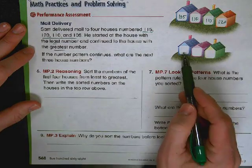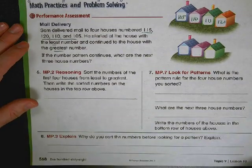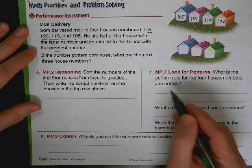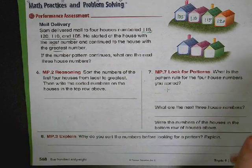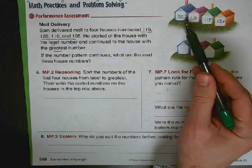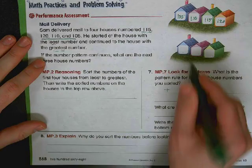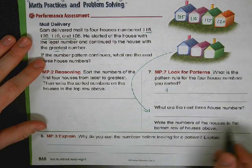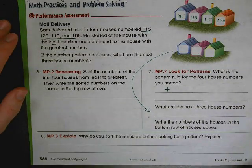What is the pattern rule for the four house numbers you sorted? Well, what's the pattern rule? It's plus or minus and you've got to figure out how many between them. From 5 to 10, from 10 to 15, from 15 to 20. What are the next three house numbers? Just write these down there and then write the numbers of the houses in the bottom row of houses above.